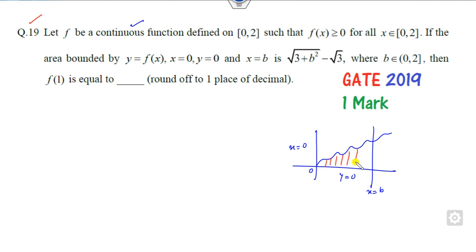What is given to you? The area bounded by the curve is √3 + b² - √3, and the limit is with respect to the x-axis from 0 to b. Now you have to find the value of f(1).